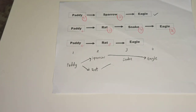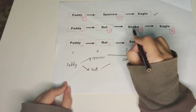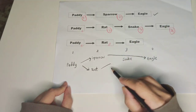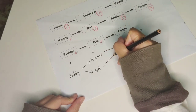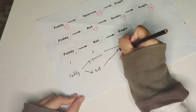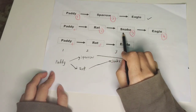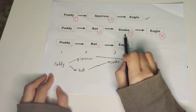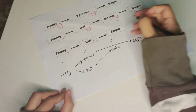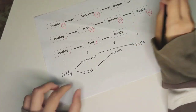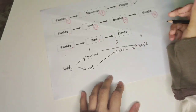Now we continue. Rat eaten by snake, and then snake eaten by eagle. I have already settled the second food chain.